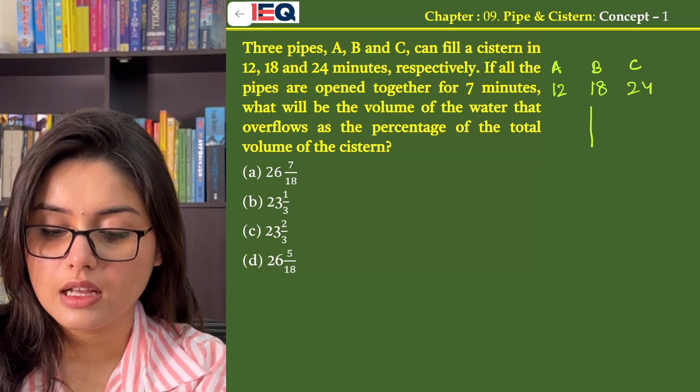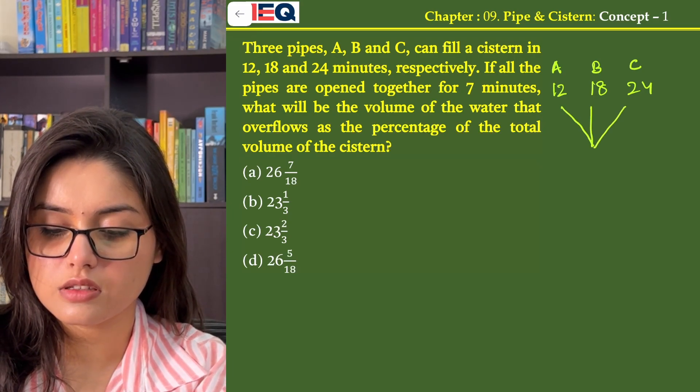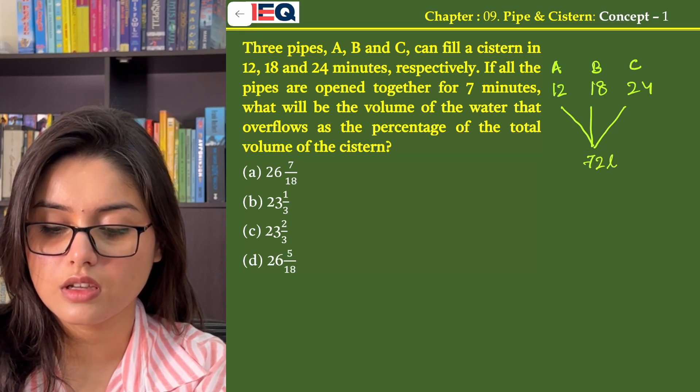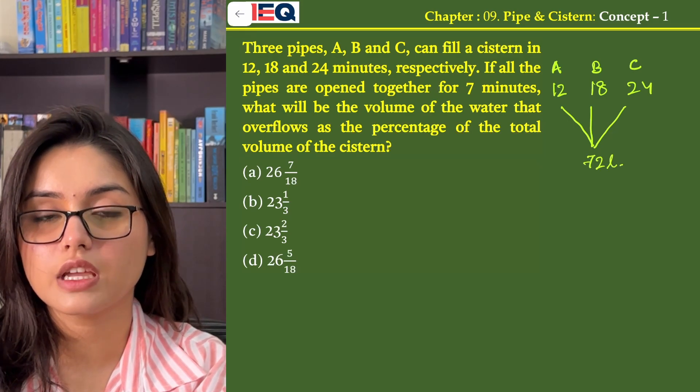Now, let's assume that the total capacity of the cistern was 72 litres which is the LCM of 12, 18 and 24.